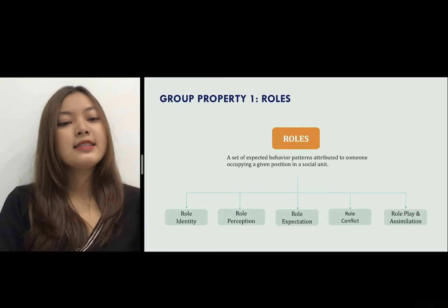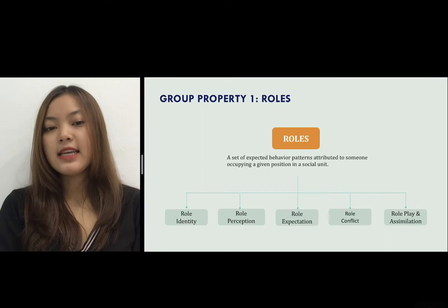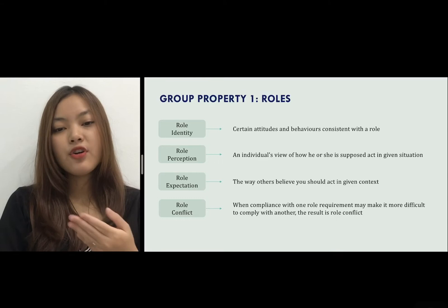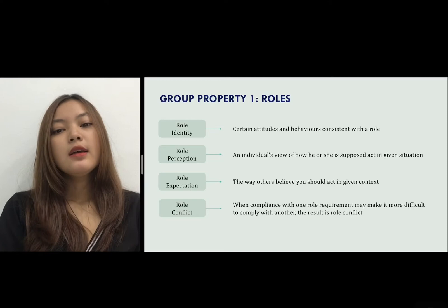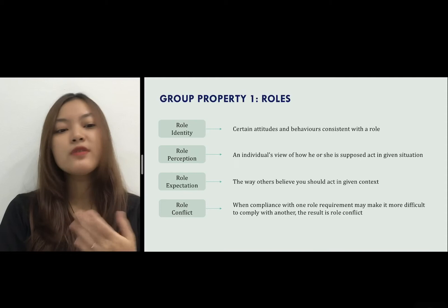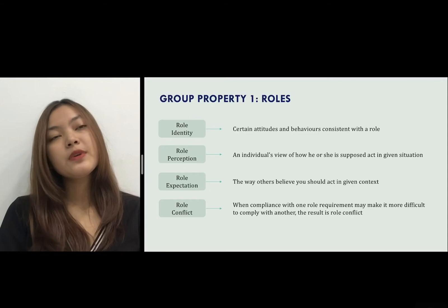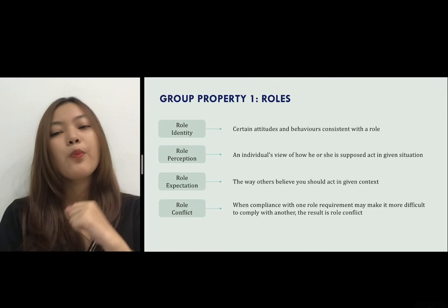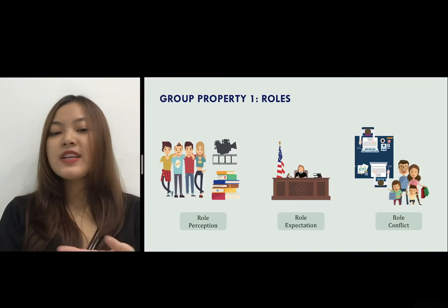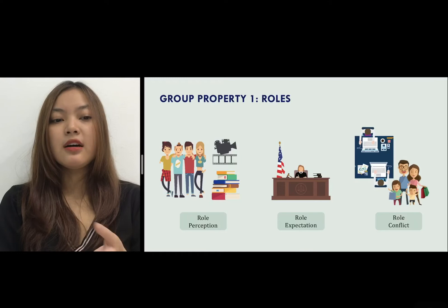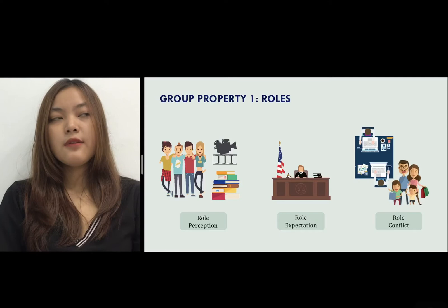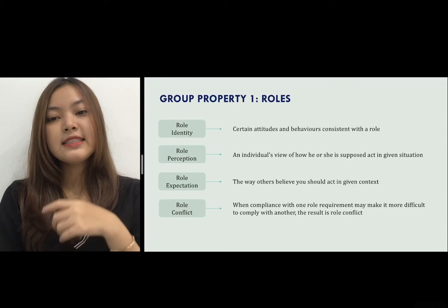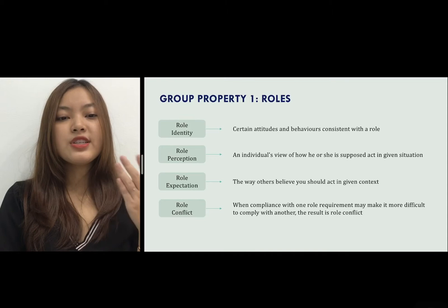Each role is assigned a certain identity that explains expected attitudes and behaviors corresponding with that role. Each individual has their own point of view of how they are supposed to act in the context of the group — this is called role perception. We get role perception from stimuli all around us, for example, friends, books, films, and television. Role expectation looks at how others believe a person should act in a given situation — a Supreme Court judge is viewed as having priority and dignity, while a football coach is seen as aggressive, dynamic, and inspiring.